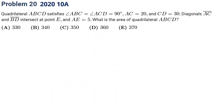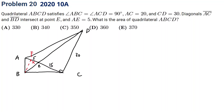The next one comes from 2020 10A, problem 20. Let's pause the video and think about it. Let's come back. I already drew the graph. We want to know the area of ABCD. Triangle ACD equals 20 times 30 divided by 2, which is 300. Now we only need to find this right triangle, and probably we need to draw a perpendicular line from B to F.